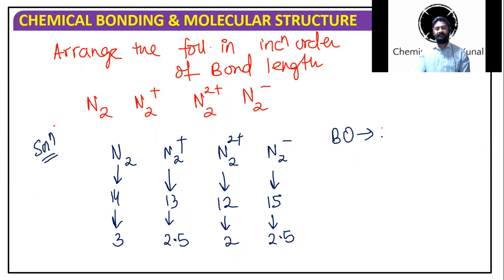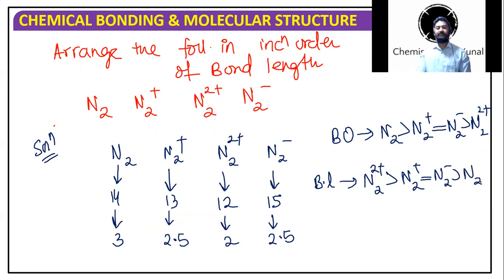So what's the bond order order? Bond order order will be N2 more than N2+, N2+ is same as N2-, and N2 2+ is least. So what's the bond length order? Just the opposite. That will be N2 2+ is the largest bond we can have, then we have these two similar, and then we have N2 the shortest one. So that's how you can do questions within seconds.